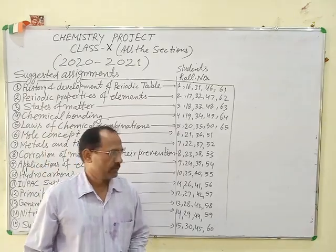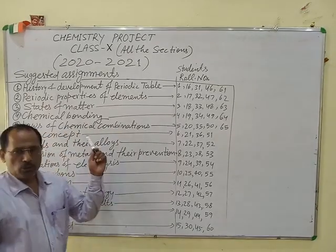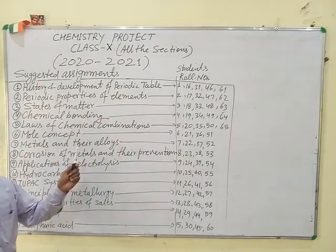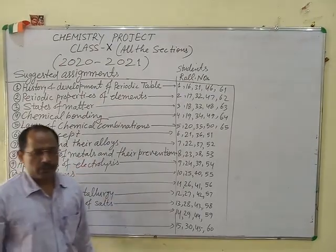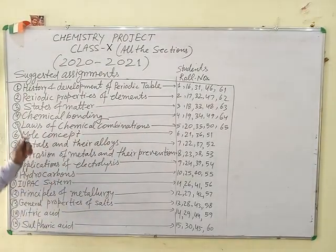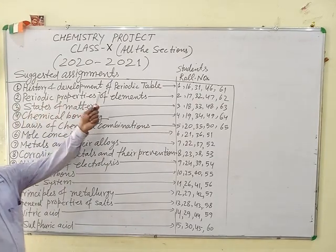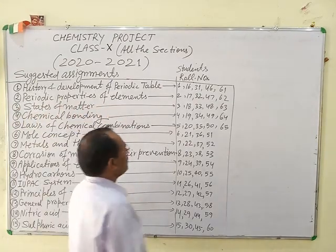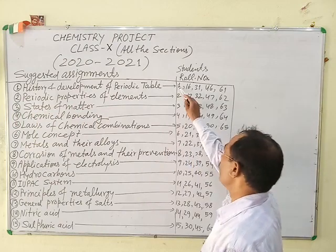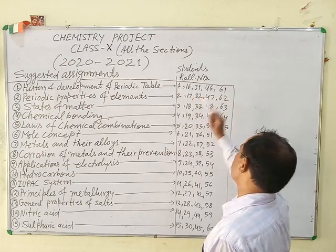Hello students. In this video, you will see the different assignments given for different students. For example, history and development of the periodic table are for roll numbers 1, 16, 31, 46 and 61.